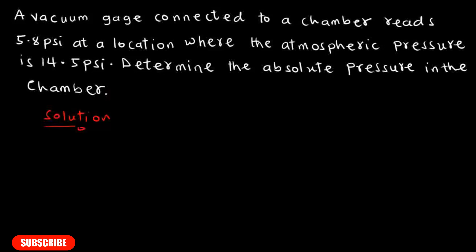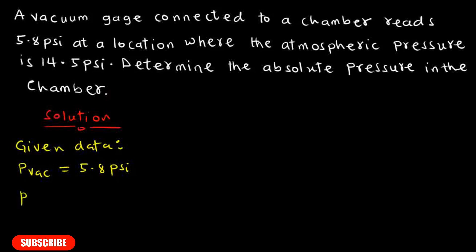Let's look at the data we have been given. A vacuum gauge connected to a chamber reads 5.8 pounds per square inch — that tells us the vacuum pressure. So the vacuum pressure equals 5.8 psi. We are also given the atmospheric pressure, P_atm, equal to 14.5 pounds per square inch.